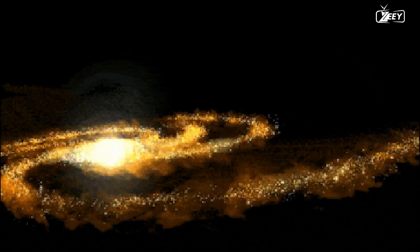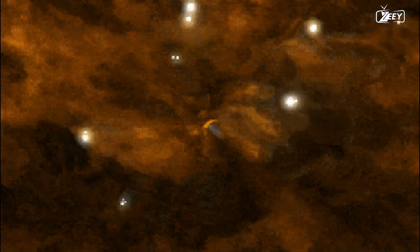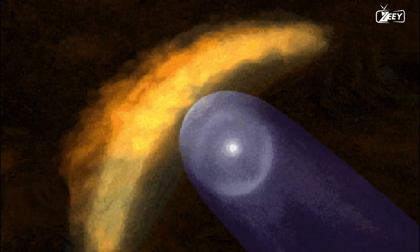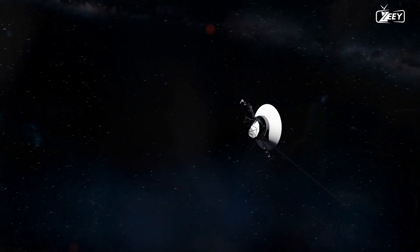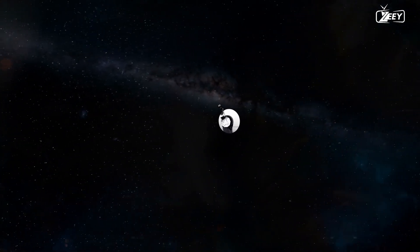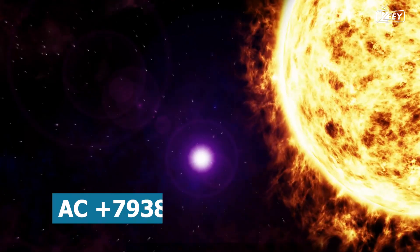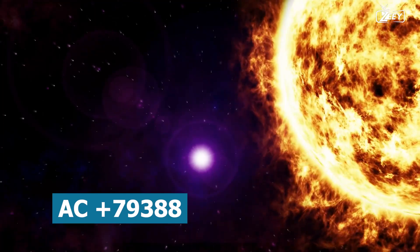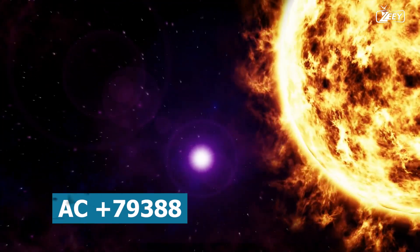The probe was able to provide us with detailed information about how charged particles from the Sun interact with particles emitted by other stars, among other astounding phenomena. In approximately 40,000 years, Voyager is expected to pass within 1.7 light-years of AC plus 79,388, a star located approximately 17.5 light-years from Earth.